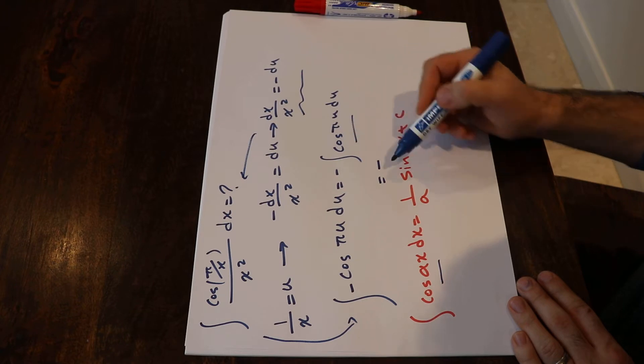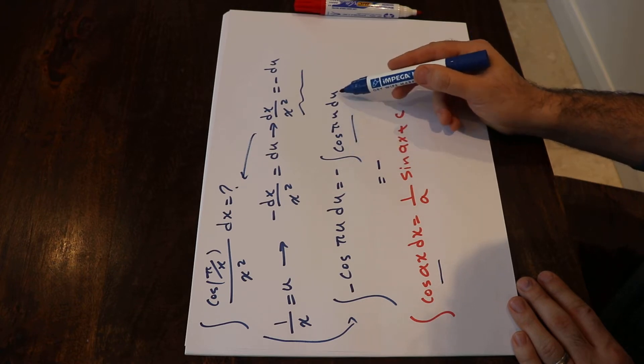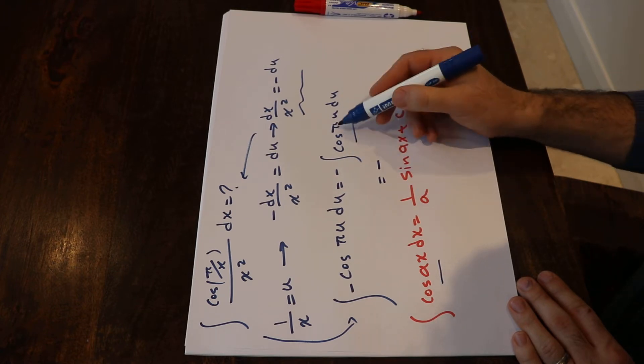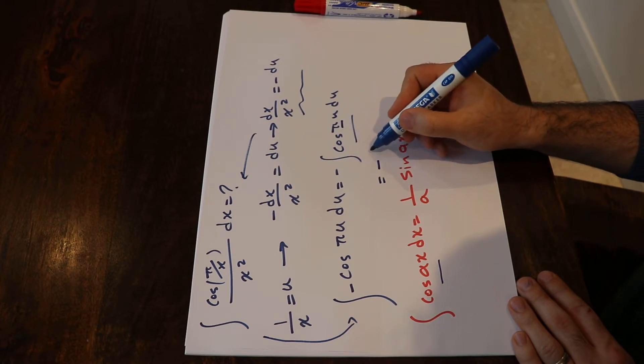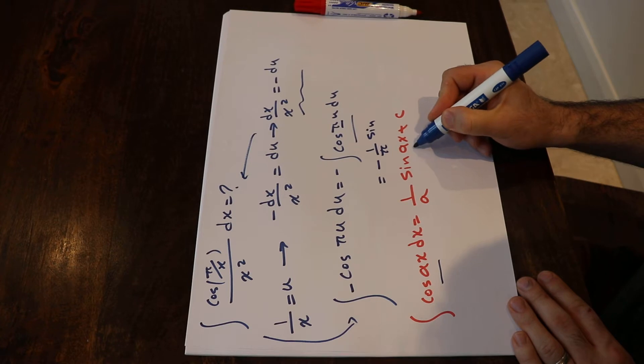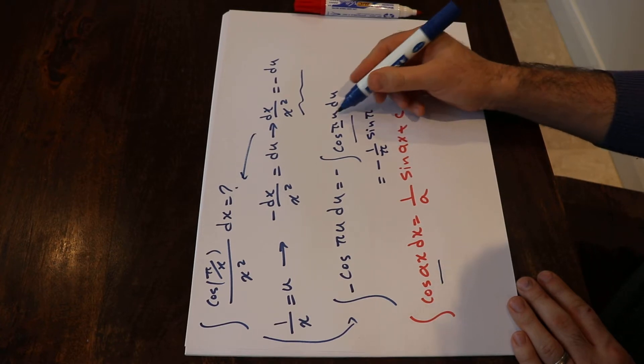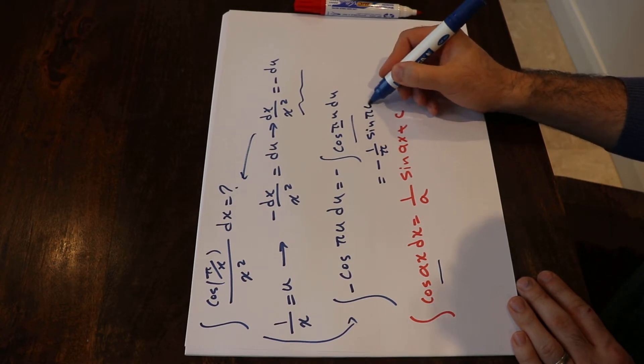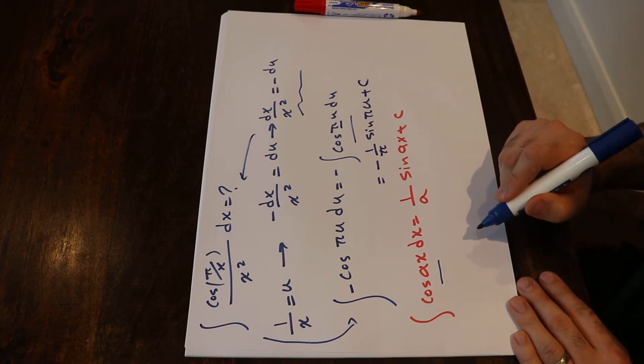This will be minus—instead of integral cosine πu du—I can write 1 divided by a, in this case a is π, so 1 divided by π times sin a, that is π times u in this case, plus c, that's the constant of the integral.